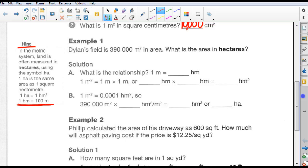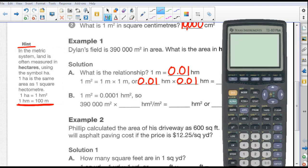Dillon's field is 390,000 meters squared in area. What is the area in hectares? Okay, well, solution. What is the relationship? Well, one meter is equal to, we know that it's a 100 to 1, so one meter is equal to 0.01 hectometers. One meter squared is one meter times one meter, or 0.01 hectometers times 0.01 hectometers. We multiply those two numbers together. That will give us an area.